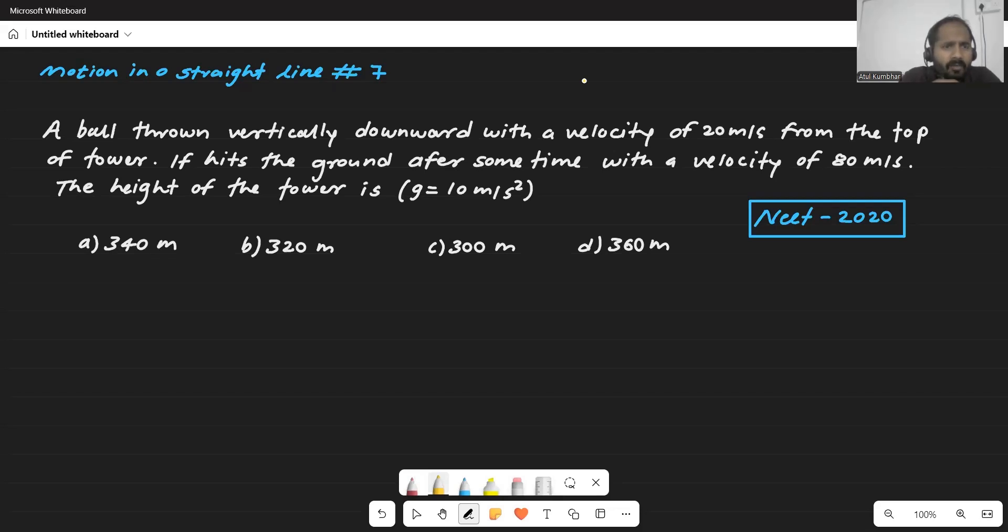Like this, a man is hitting on this building. In a similar way, a ball is hitting here which is having a velocity of 20 meters per second. So there was one question asked in NEET 2020. Let's read the question.